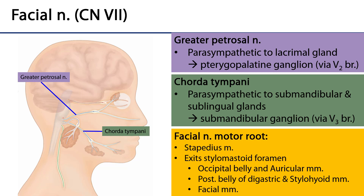Facial nerve in the canal gives off the greater petrosal nerve. That greater petrosal nerve is going to conduct pre-ganglionic parasympathetic fibers to the pterygopalatine ganglion. From that pterygopalatine ganglion, post-ganglionic fibers are going to hitchhike along V2 to parasympathetically serve the lacrimal gland to produce tears for the eye.